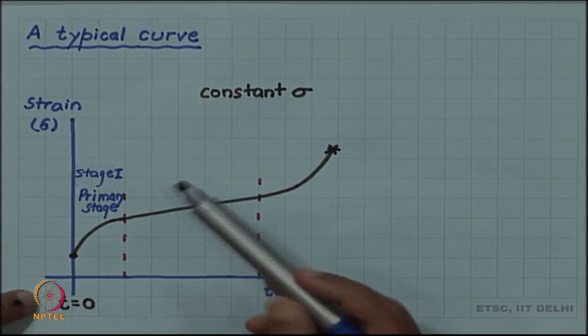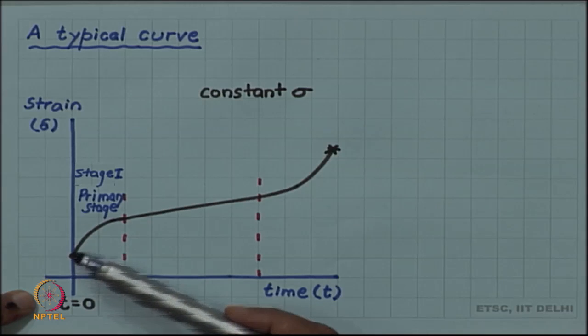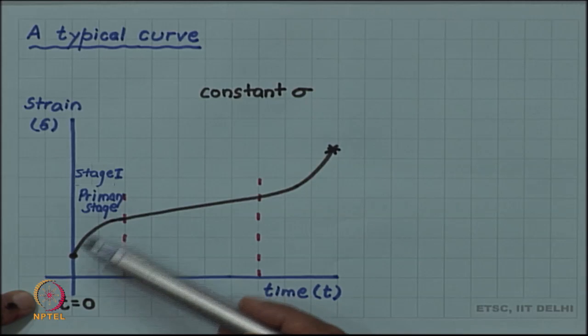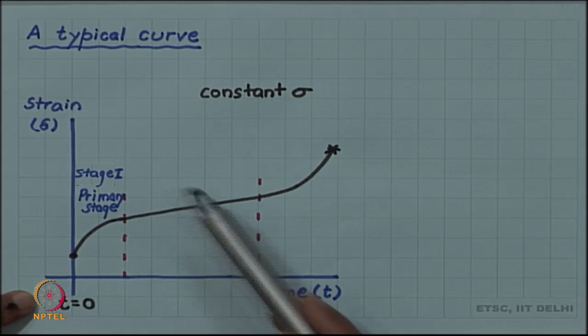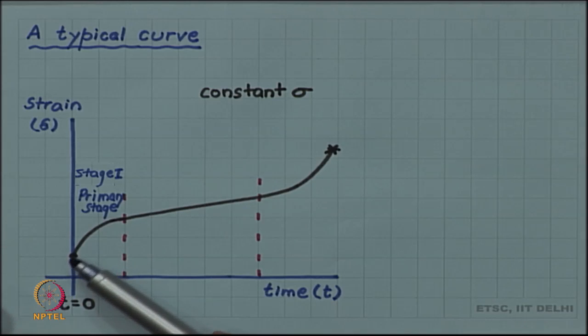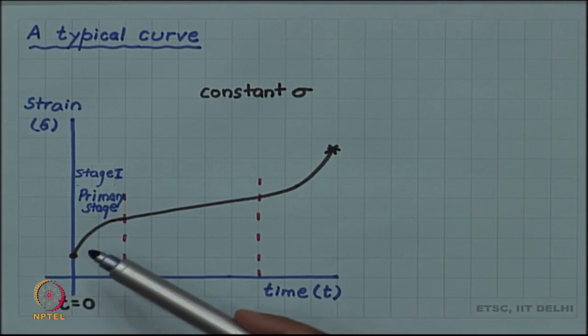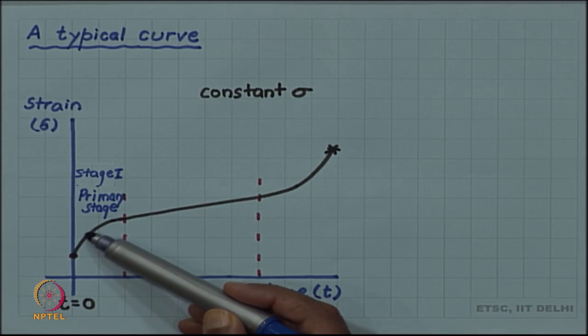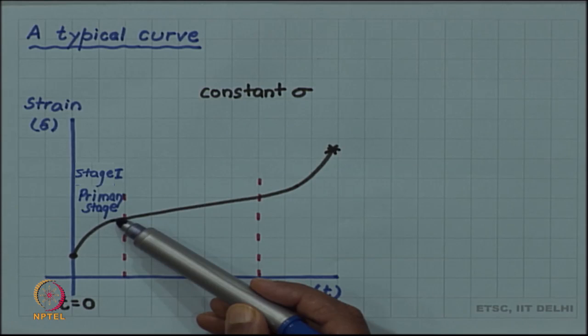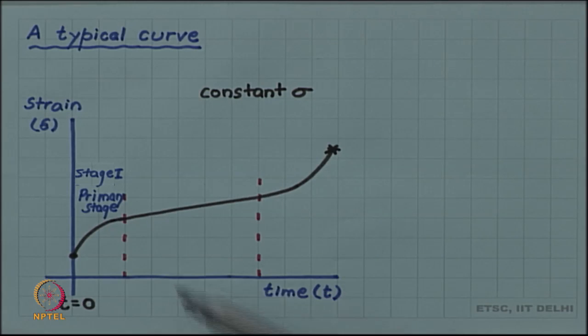Here you can see that the creep rate was initially, the strain rate of the creep curve is called the creep rate or the strain rate. The strain rate is initially quite high and is gradually becoming less. That is stage 1.